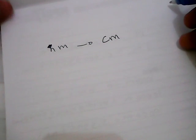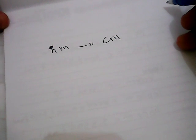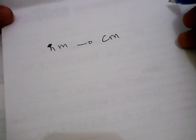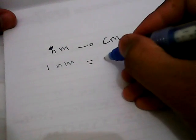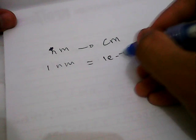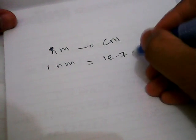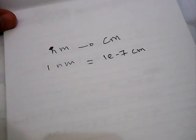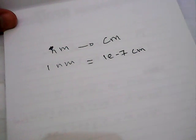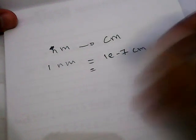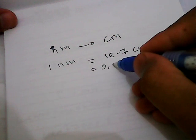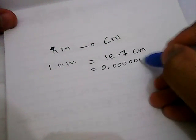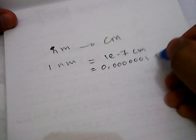Before we start solving an example problem that I'll give you after this, we need to know that 1 nanometer is equal to 1×10^-7. What is this number? It seems not really familiar with me. Well, it's actually the same as we write 0.0000001. It's actually the same number.